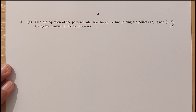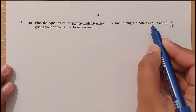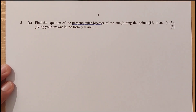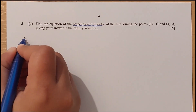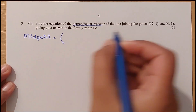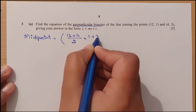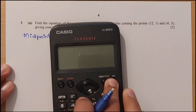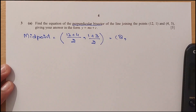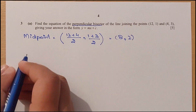Question 3, Part A: find the equation of the perpendicular bisector of the line joining the points (12, 1) and (4, 3), giving the answer in the form y equals mx plus c. The perpendicular bisector's slope must be the negative reciprocal. First, the midpoint: x is (12 plus 4) divided by 2 equals 8, and y is (1 plus 3) divided by 2 equals 2. So the midpoint is (8, 2).